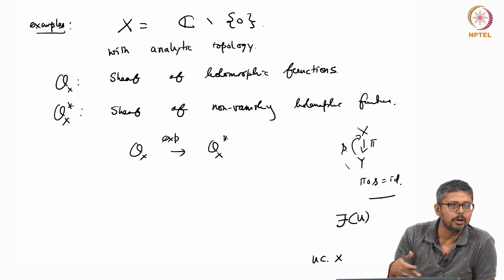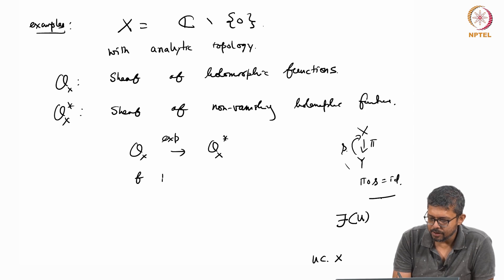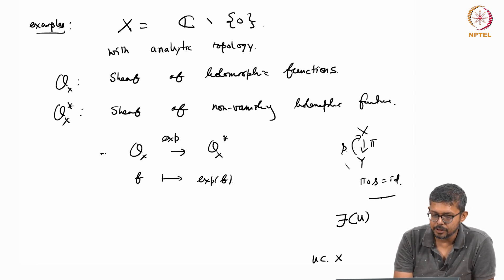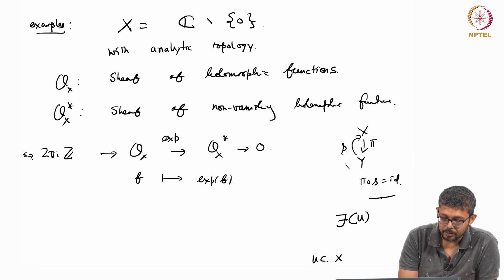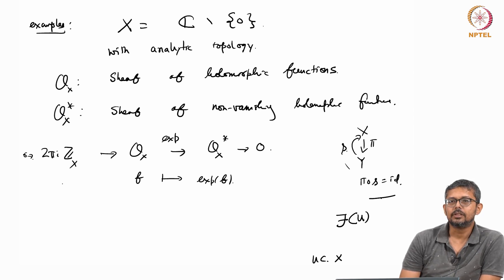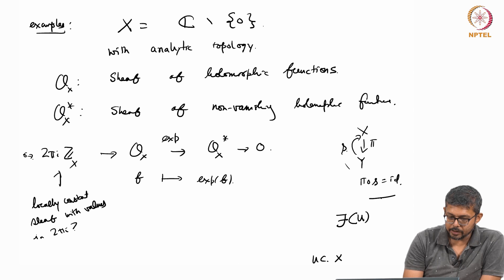That is why elements of OX of u are called sections — sections over u. If you take f, which is a section on OX of u, you send it to the exponential of f. You see that this is a surjective map, and the kernel is nothing but 2πi·Z. This is the sheaf of locally constant functions with values in 2πi·Z, denoted 2πiZ on x. For every open set u in x and a point there, you can find a neighborhood around x such that the section in that small neighborhood is constant.